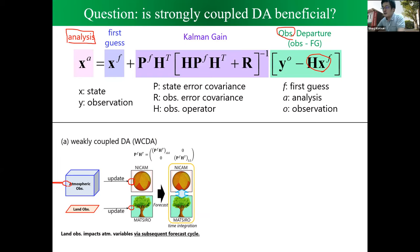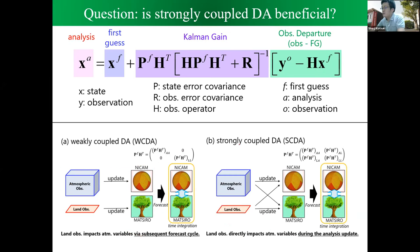During the forecast, the atmosphere and land processes interact, and the land observation impacts the atmosphere variables via a subsequent forecast cycle. But in the data assimilation cycle, there is no feedback from the atmosphere to land or land to atmosphere. That is why the error covariance is assumed to be zero between atmosphere and land variables. In this study, we extended to strongly coupled data assimilation, where we consider the error covariance between land observation and atmosphere variables, and the atmosphere observation to land variables.